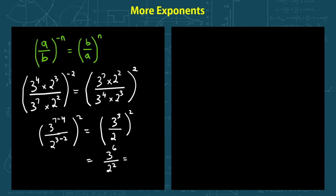That calculates out to 729 over 4. Another rule I would like to bring up is when you multiply different numbers with the same exponent.